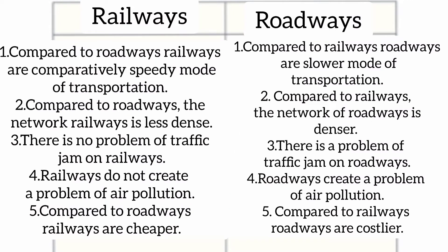First, differentiate between railways and roadways. First point: railways are comparatively a speedy mode of transportation, whereas roadways are a slower mode of transportation. Second point: the network of railways is less dense, whereas the network of roadways is denser. Third point: there is no problem of traffic jams on railways.